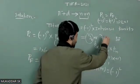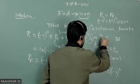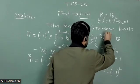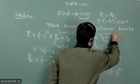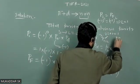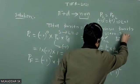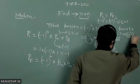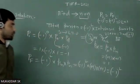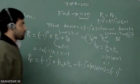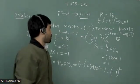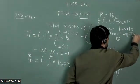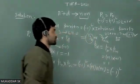The allowed state will be the P state. For this state, we can clearly see that two S plus one equals three, which means S equals one. So the total orbital quantum number of the product is one, and the total spin quantum number is also one. This is the answer. Thank you.